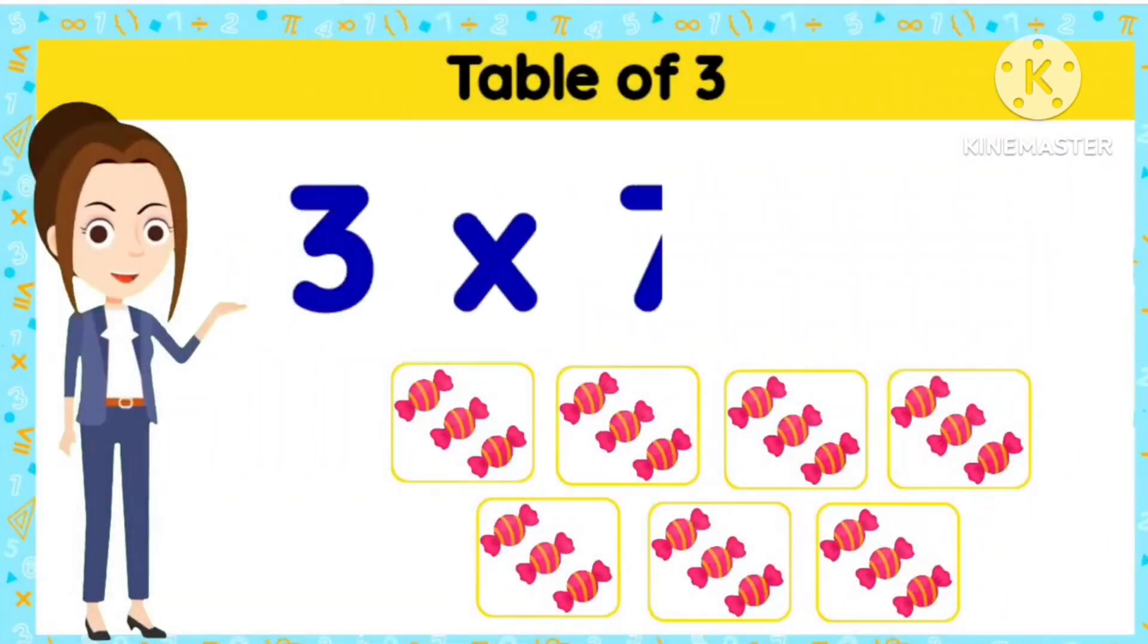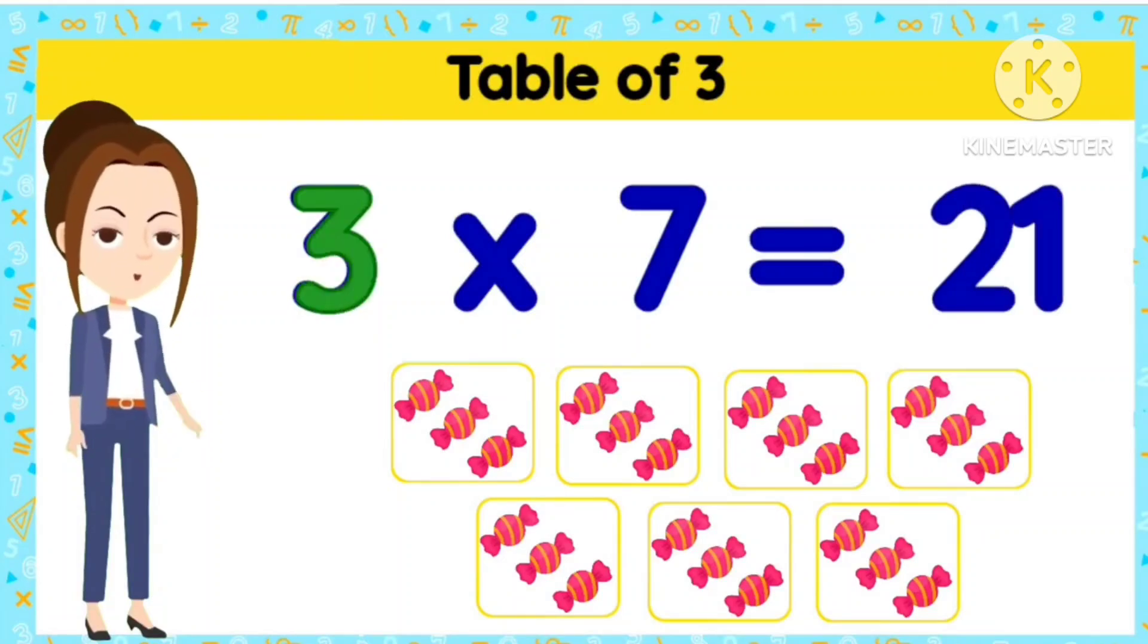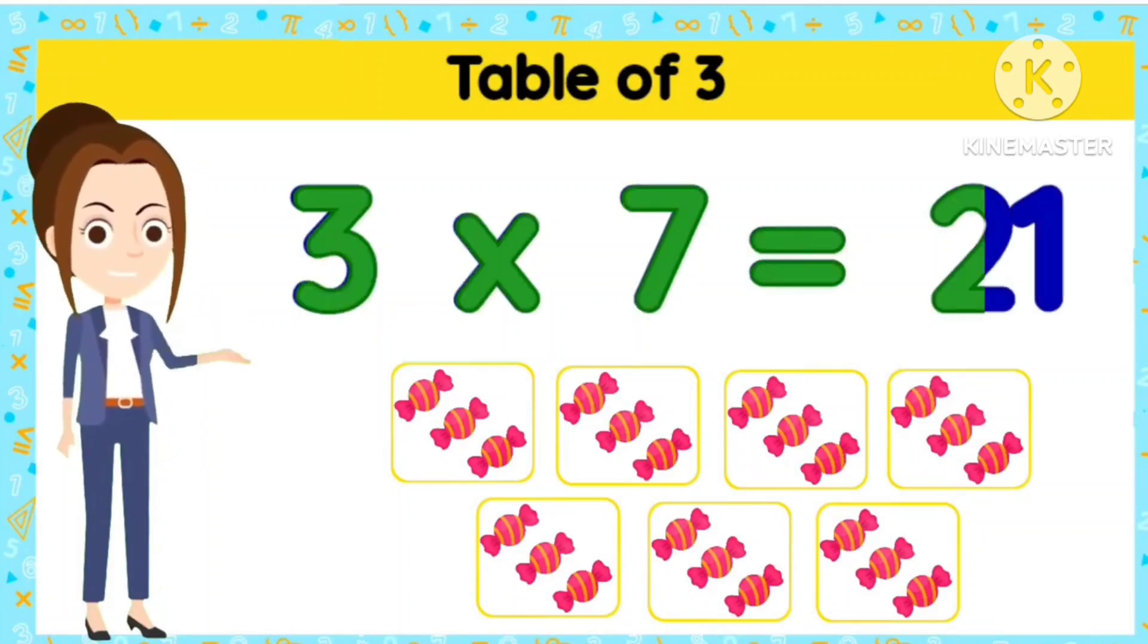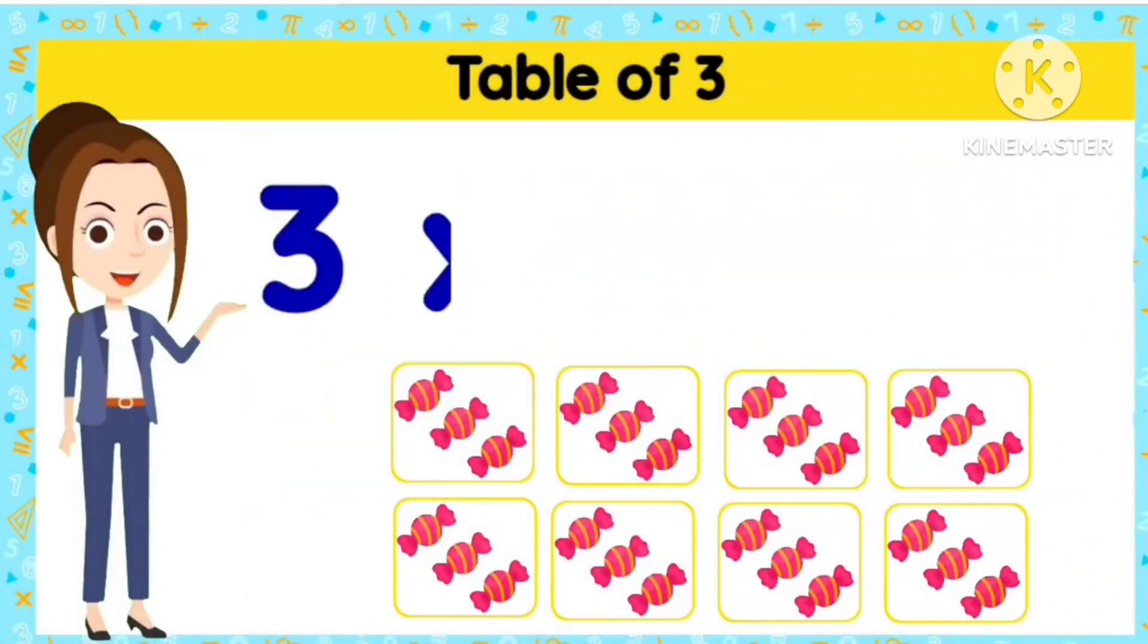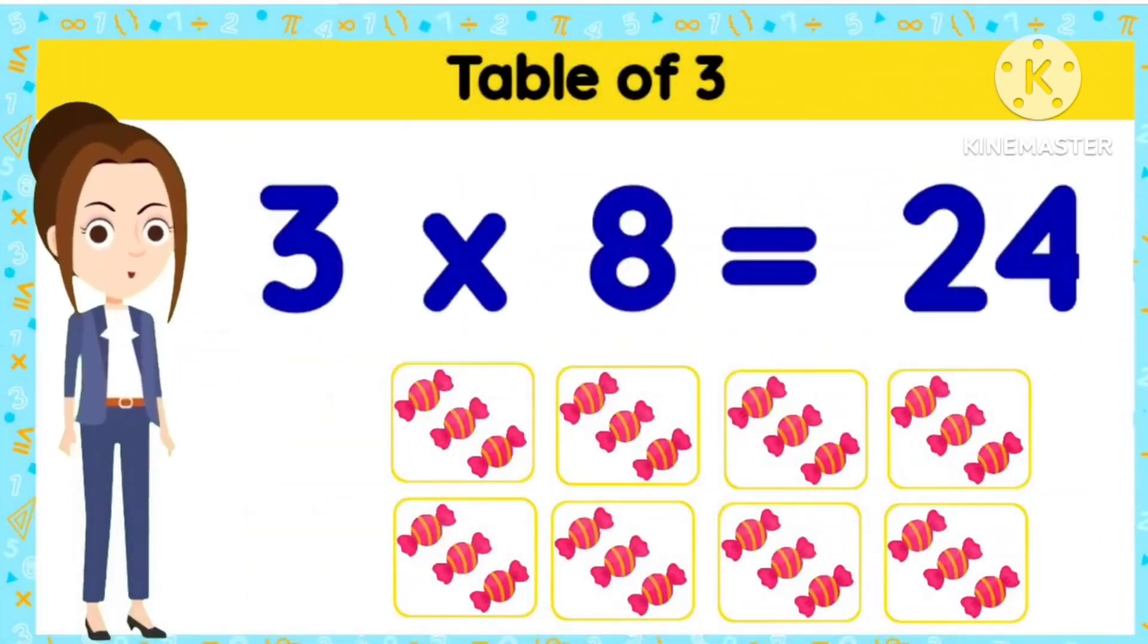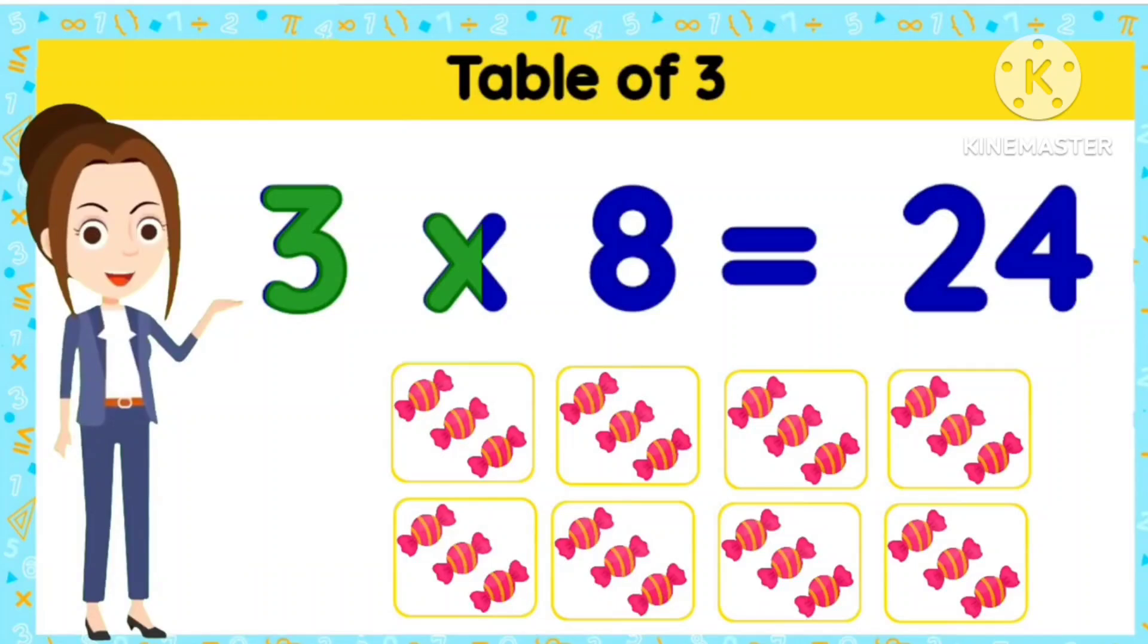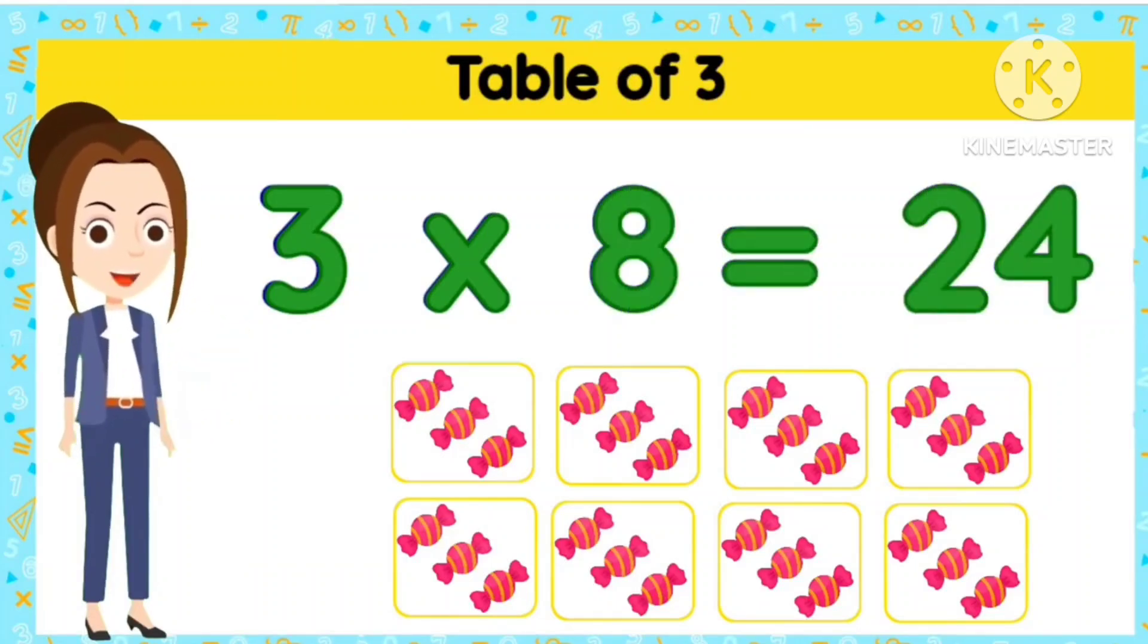3 7s are 21. 3 7s are 21. 3 8s are 24. 3 8s are 24.